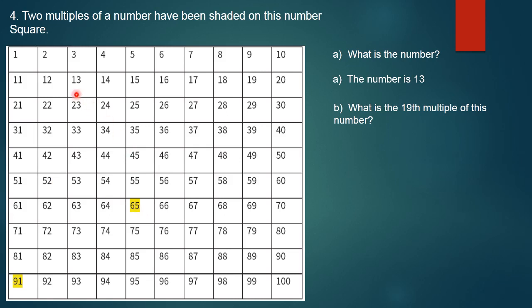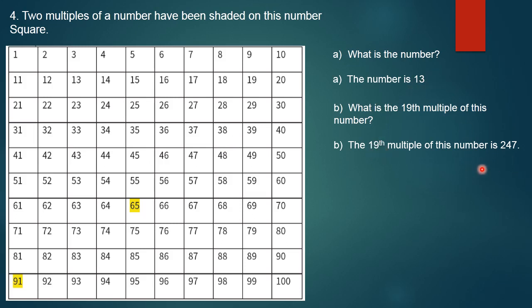You can check from the square: multiples of 13 are 13, 26, 39, 52, 65 — and the next is 91. So the number is 13 and these are all multiples of 13. Option B: what is the 19th multiple of this number? The number is 13 — 19 multiplied by 13 gives 247. So the 19th multiple of 13 is 247. I hope you understand it well.